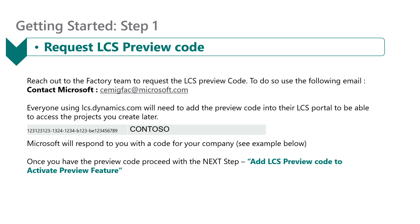To get started, request an LCS preview code from the Microsoft Factory team using the provided email address. Everyone using lcs.dynamics.com would need to add this preview code into the LCS portal to access all their projects. The preview code will look similar to the example shown, and Microsoft will respond with the code for your company. Once you have the preview code, proceed with the next steps.